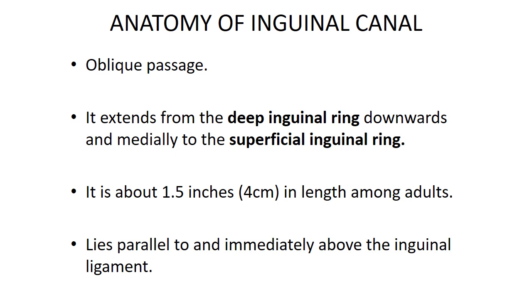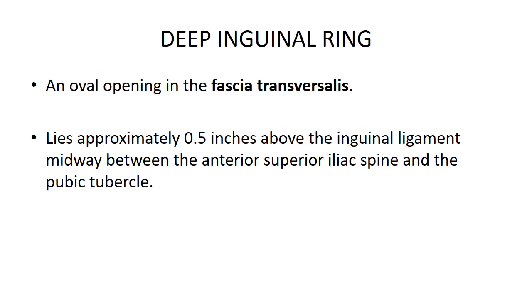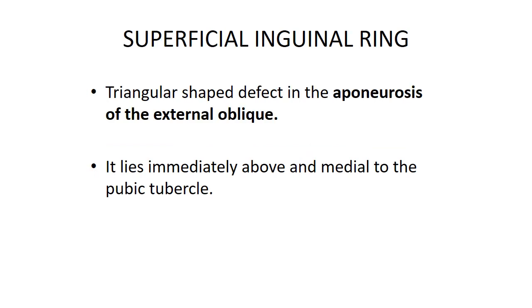Anatomy of the inguinal canal: it is an oblique passage that extends from the deep inguinal ring downwards and medially to the superficial inguinal ring. It is about 1.5 inches (4 cm) in length among adults and lies parallel to and immediately above the inguinal ligament. The deep inguinal ring is an oval opening in the fascia transversalis, lying approximately 0.5 inches above the inguinal ligament, midway between the anterior superior iliac spine and the pubic tubercle. The superficial inguinal ring is a triangular-shaped defect in the aponeurosis of the external oblique, lying immediately above and medial to the pubic tubercle.